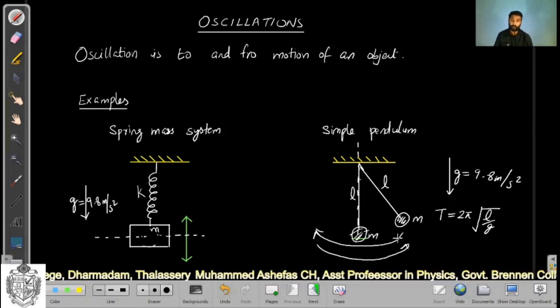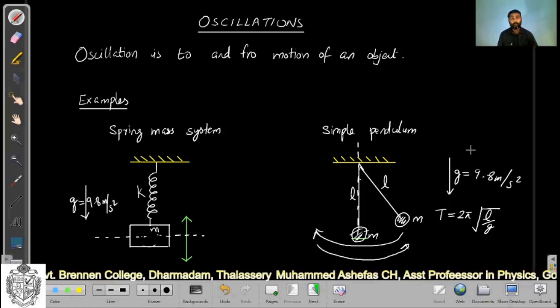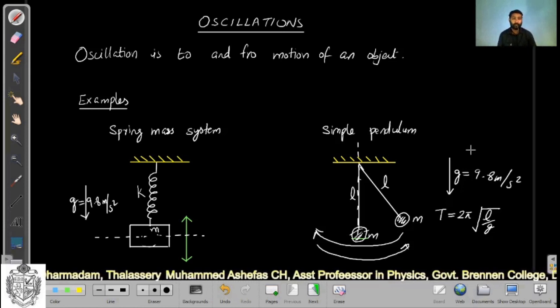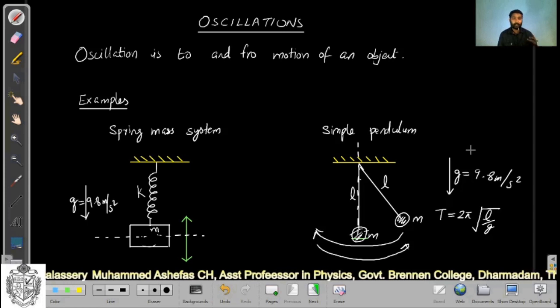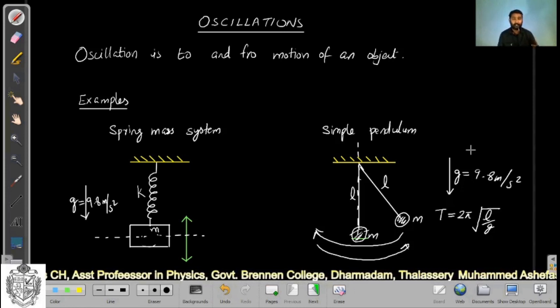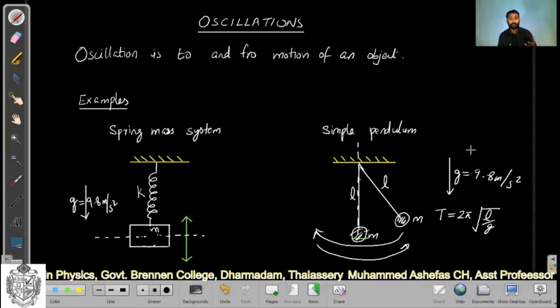Now you can answer which posture would be comfortable for running. For faster movement, we have to reduce the time period of oscillation. You can consider your legs and hands are just like simple pendulums. If you reduce the length of the legs and hands, then you can oscillate faster, you can run faster. So the more comfortable posture while you are running would be folding your hands.